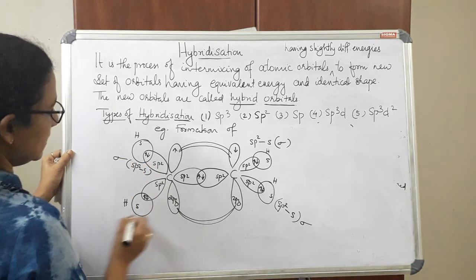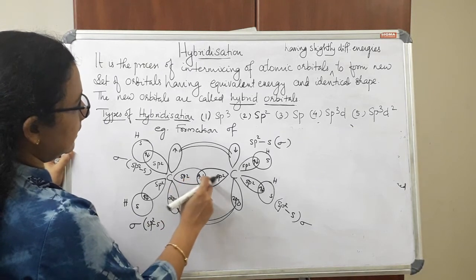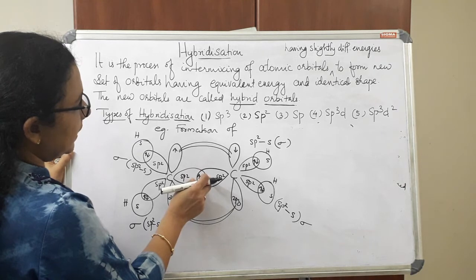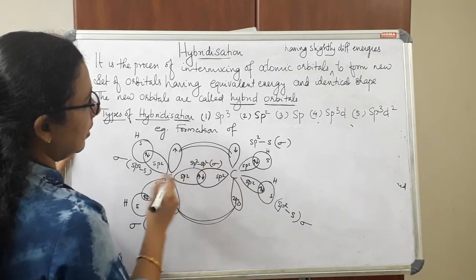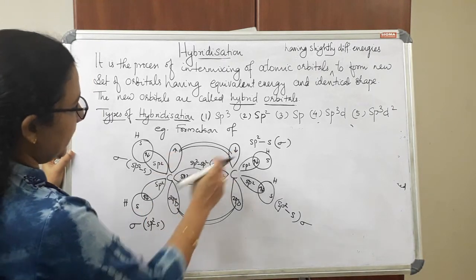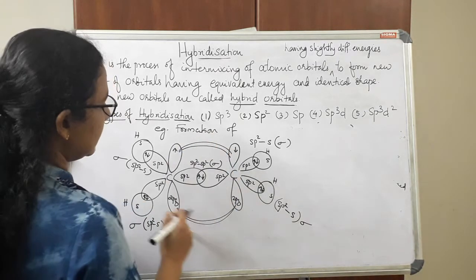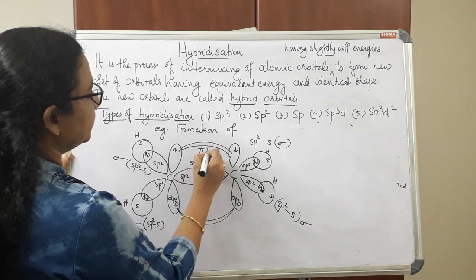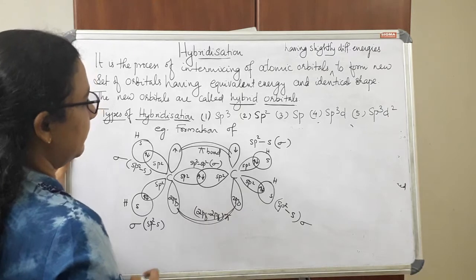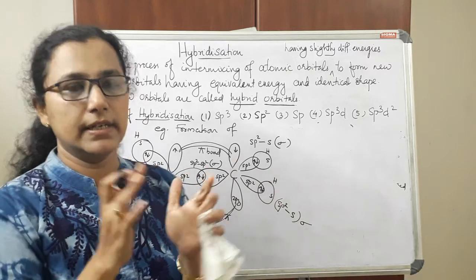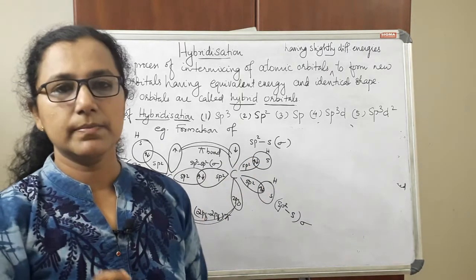In the case of sp2–s overlapping, axial overlapping takes place and a sigma bond is formed. The sp2–sp2 overlapping is also axial, giving a sigma bond. The 2pz–2pz overlapping is a lateral overlap, so a pi bond is formed. In all other cases, axial overlapping takes place and sigma bonds are formed.